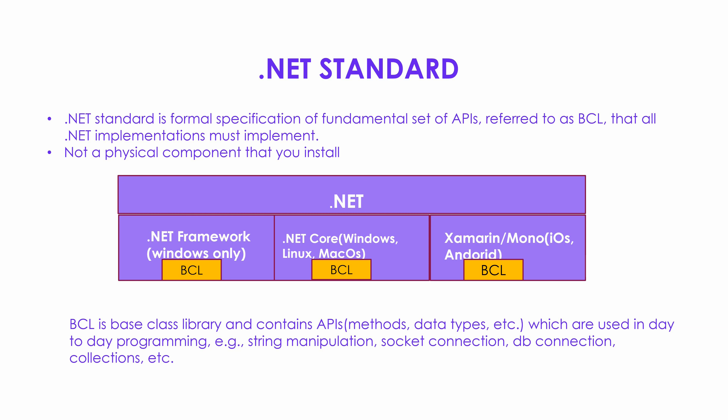.NET standard is a formal specification of a fundamental set of APIs which are implemented in the BCL. BCL is nothing but the base class library, which is implemented by the .NET runtime. As you know, we have different runtimes of .NET, which means that .NET has different flavors — .NET Core, .NET Framework, Mono, Xamarin — these are all different implementations of .NET. Each of these implementations has its own runtime, and each runtime has a base class library, or BCL.